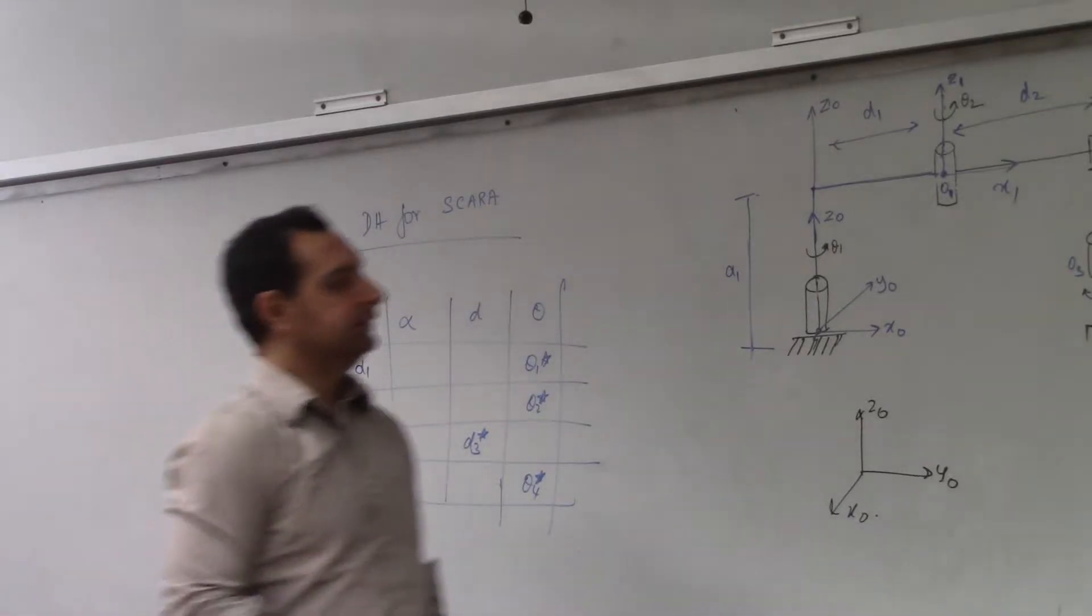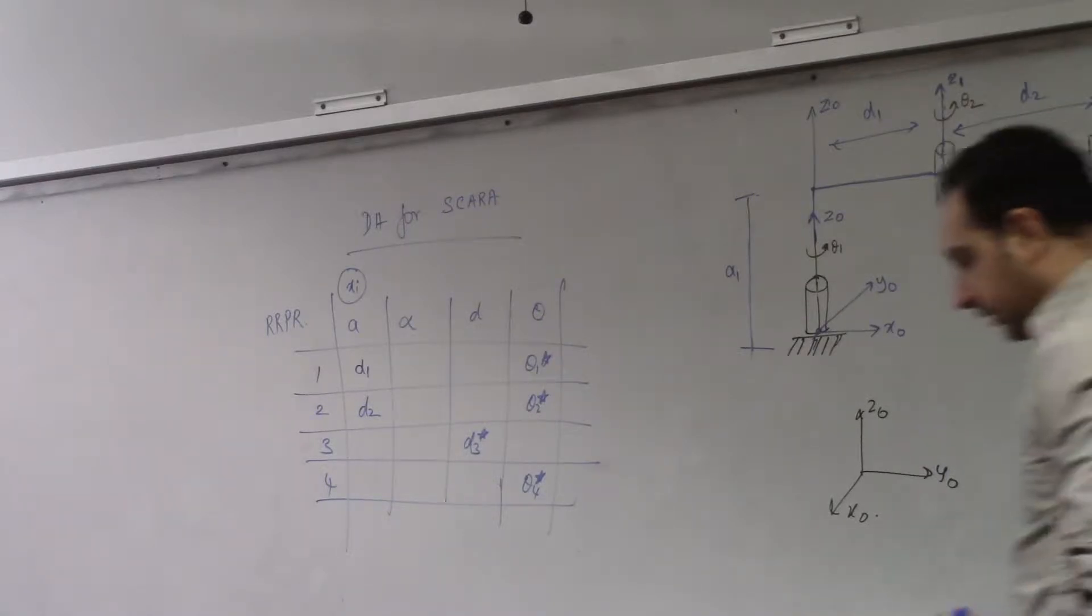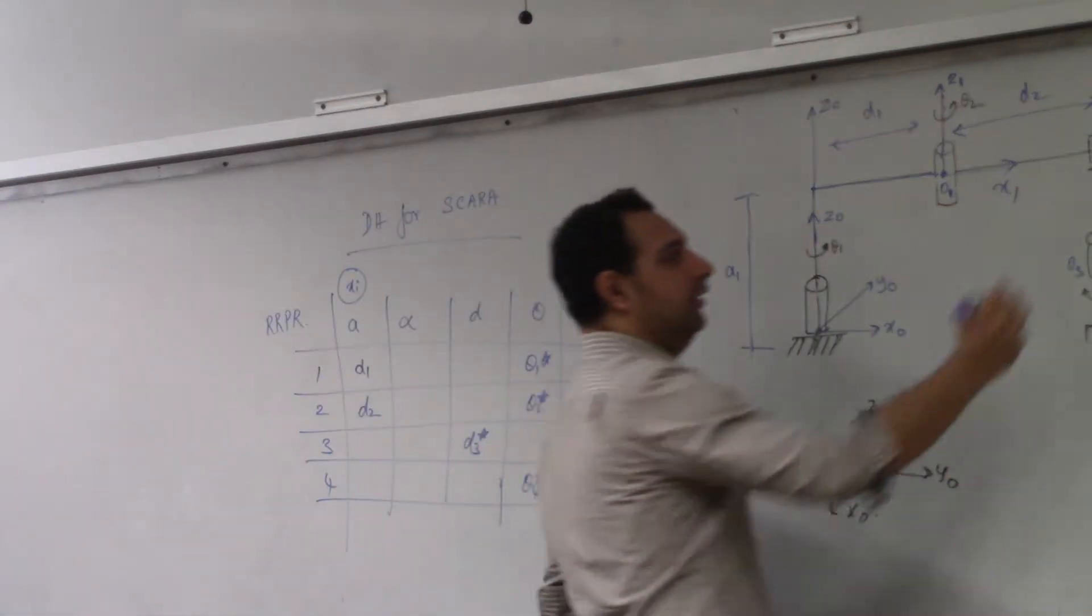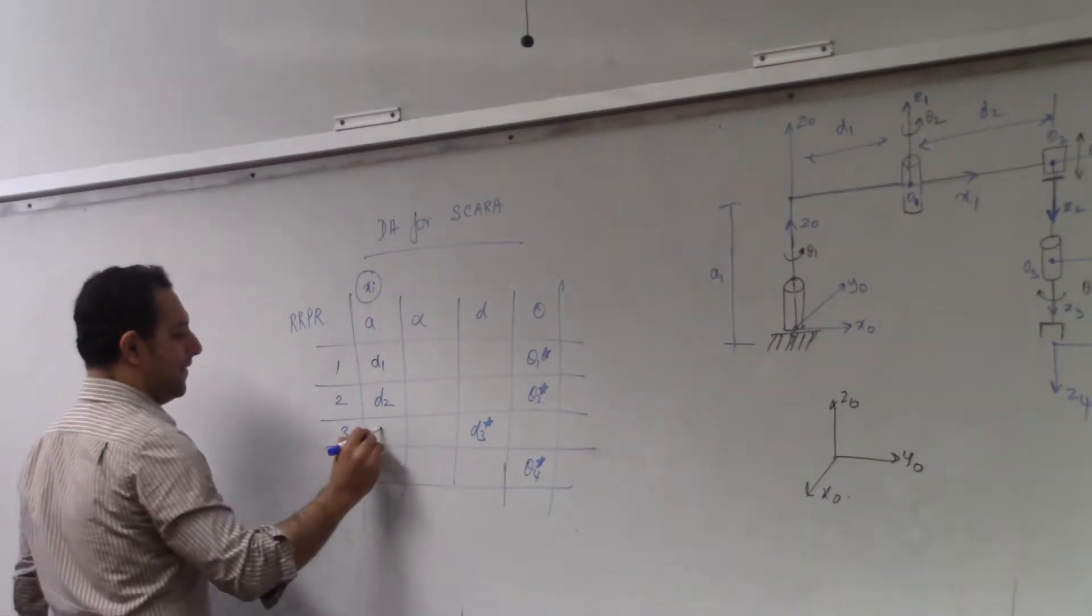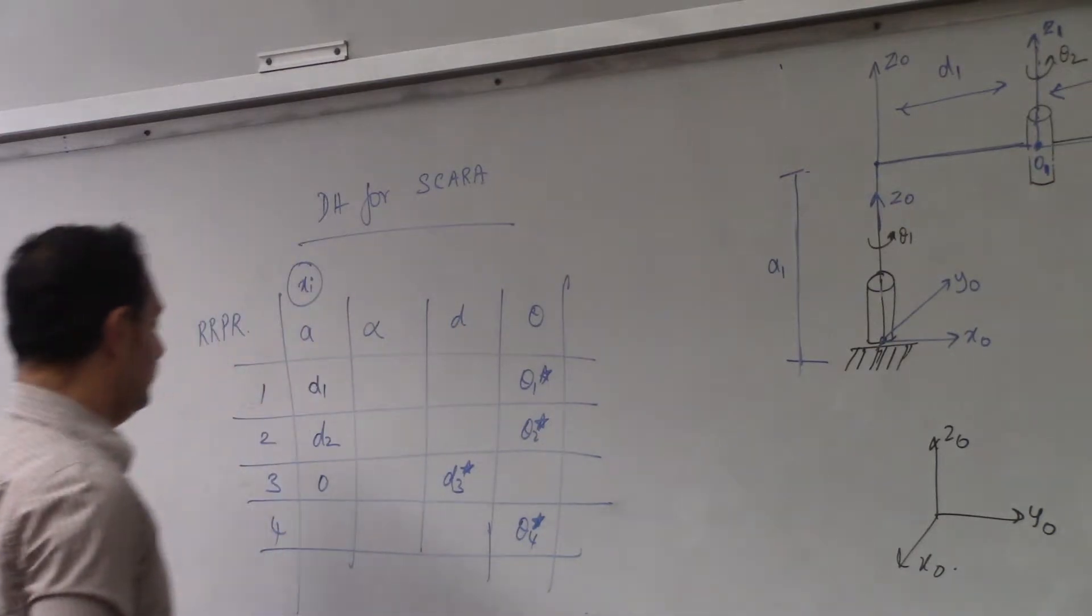X3. How about X3? I'm sorry, A3, not X3. A3 measured along X3. What is A3? This should be zero. This should be zero. Alright. If you keep on saying zero at one point, you'll be right, right? Same applies to X4. It's also zero.